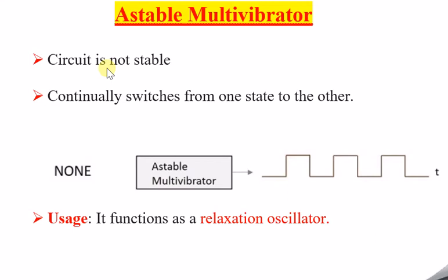Since this multivibrator circuit is not having any stable state, it is unstable. If it is not stable then definitely the circuit will be unstable. So how will it be unstable? It continuously switches from one state to another. After some time it changes to the next state — it will not remain in any one state. It continuously changes state, one after the other.